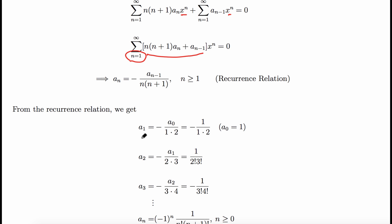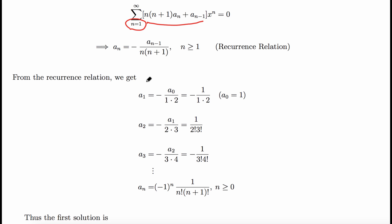Let's find the first few terms. Setting a₀ = 1, for n=1 we get a₁ = -1/(1·2). For n=2: a₂ = -a₁/(2·3) = 1/(1·2·2·3) = 1/(2!·3) — simplifying, 1·2·2·3 = 2!·3, giving 1/(2!·3). Actually working it through: a₂ = 1/(1·2·2·3) and combining factorials gives 1/(2!·3!). For n=3: a₃ = -1/(3!·4!). The pattern of signs is alternating: negative, positive, negative.